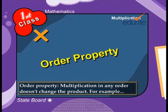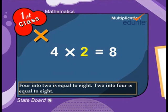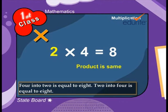Order property: Multiplication in any order doesn't change the product. For example, 4 into 2 is equal to 8. 2 into 4 is equal to 8.